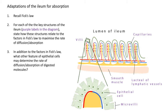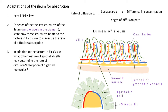Fick's Law: the rate of diffusion is proportional to the surface area of the exchange surface, multiplied by the difference in concentration — sometimes referred to as the diffusion gradient — divided by the length of the diffusion path. Now let's look at part two and what you should have identified.